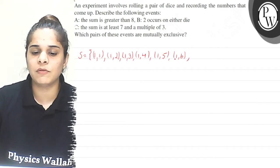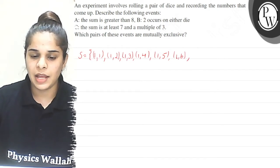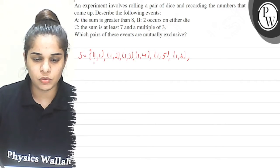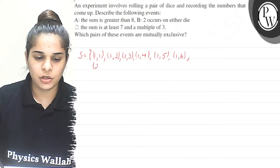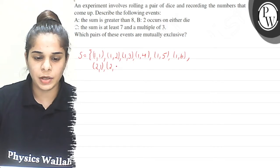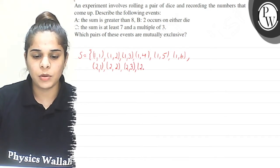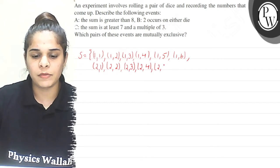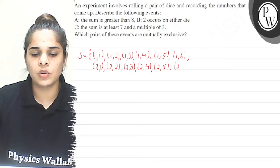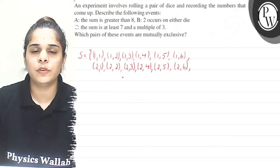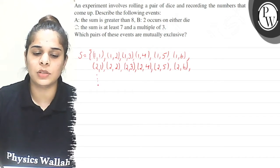Now I can fix 2 in the first die, so I will get (2,1), (2,2), (2,3), (2,4), (2,5), and (2,6). Same thing I can do for 3, 4, 5 and so on.